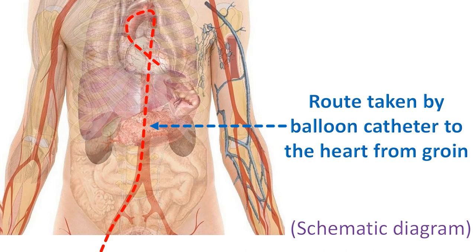Transapical access is usually done with a mini thoracotomy, still avoiding the midline sternotomy needed for surgical aortic valve replacement. Transcarotid access is also picking up in those who have no femoral access.